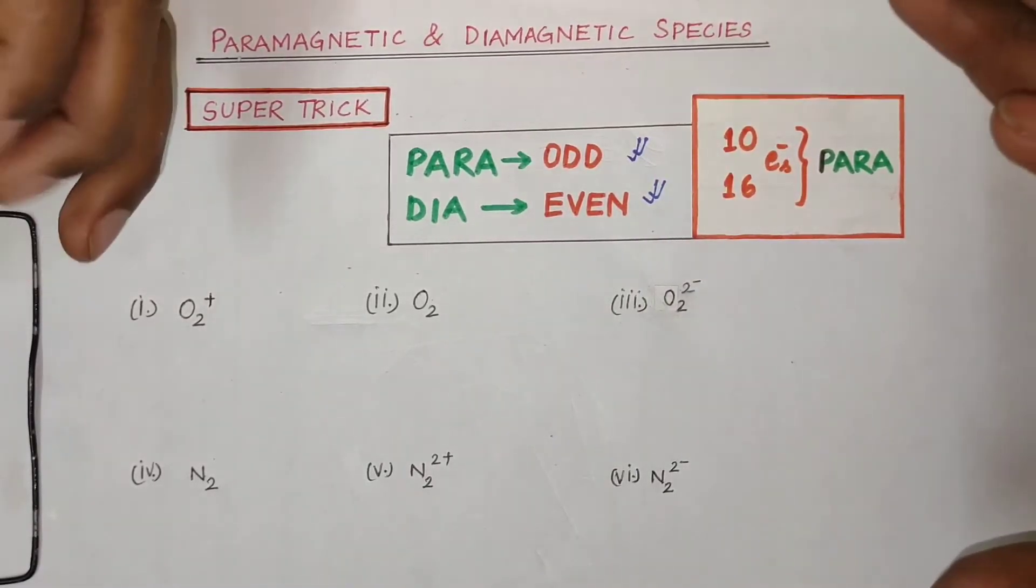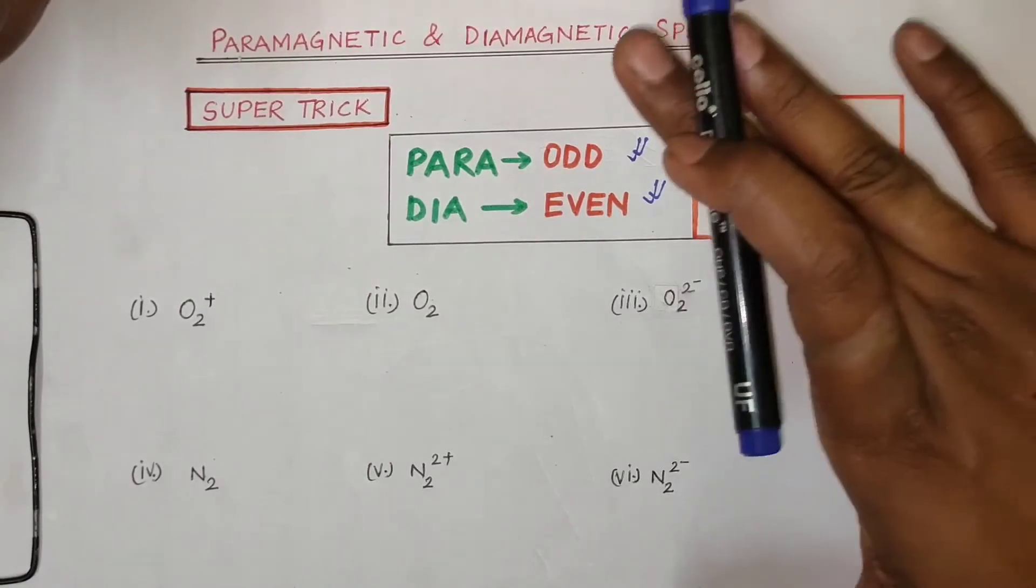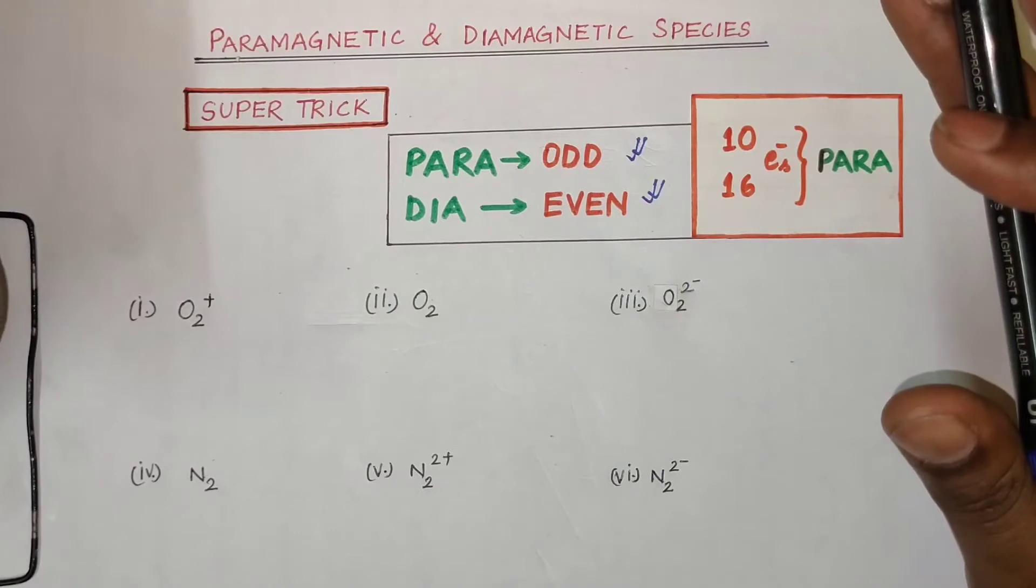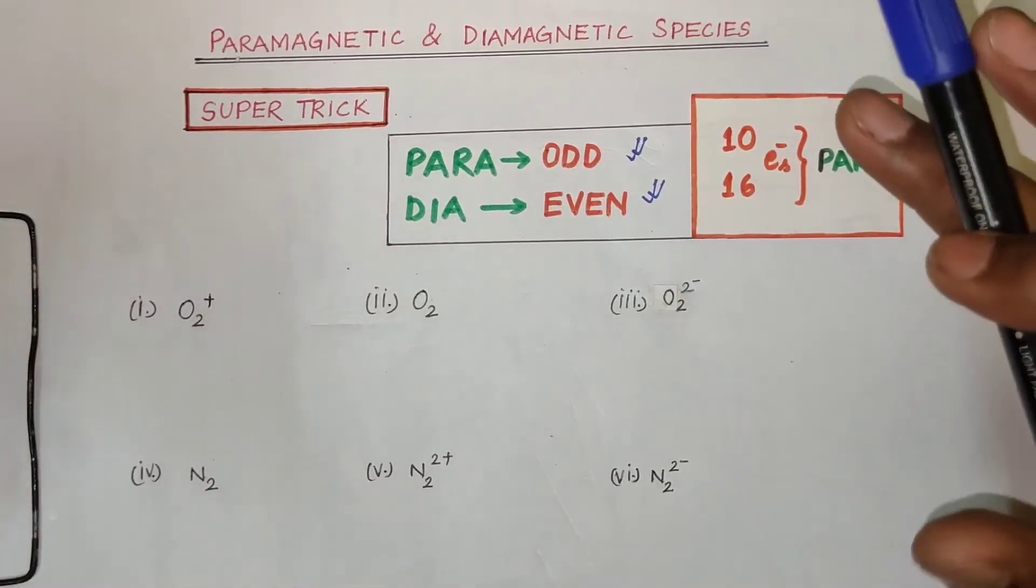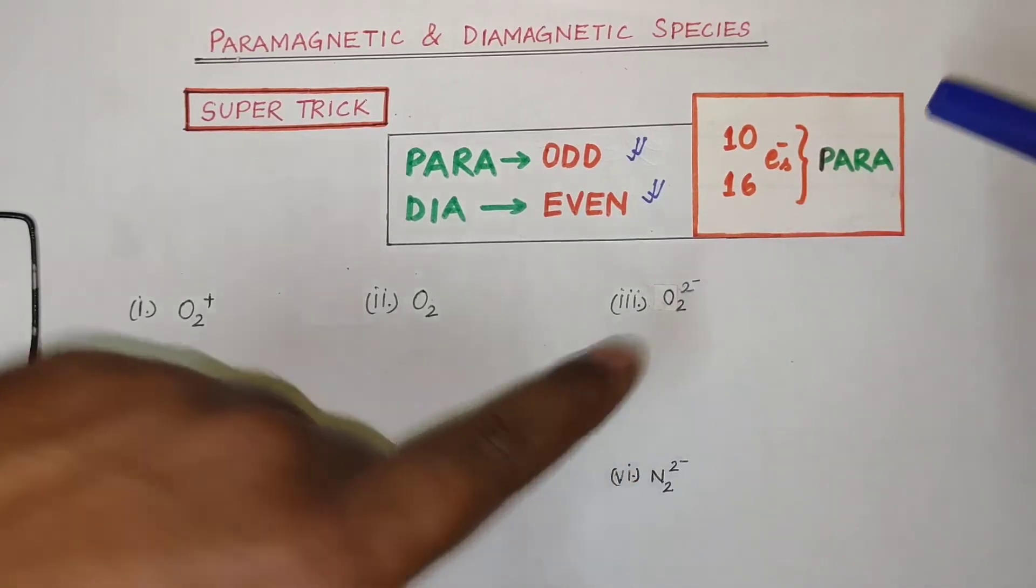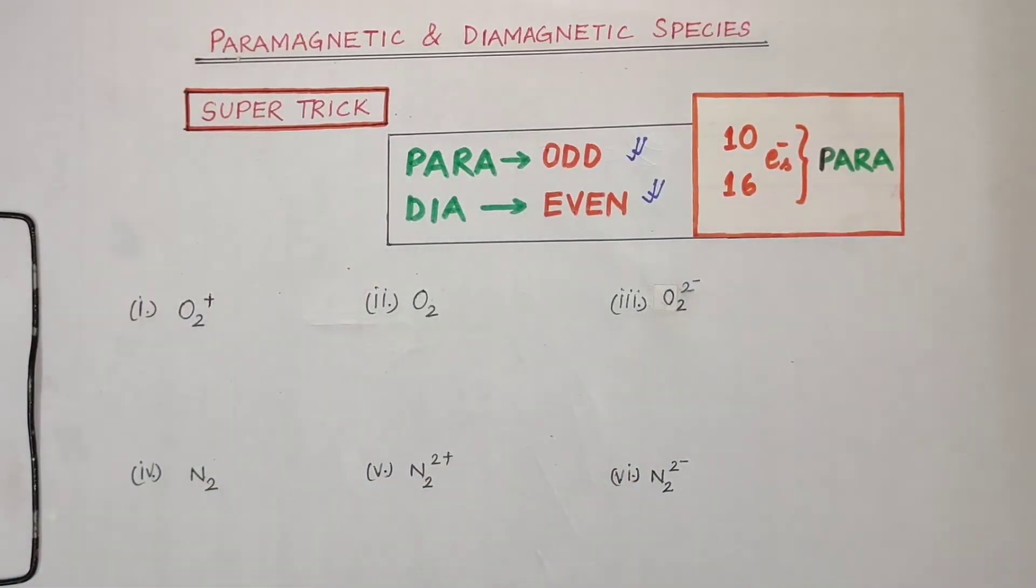So what do we need to do to see the exception? If we want to see paramagnetic but even, we need to think that if we want to see 10 or 16 electrons, we want to see which species is paramagnetic and which is diamagnetic.